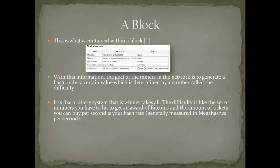You have many people playing Powerball or Mega Millions, and sometimes jackpots get very large. The difficulty is the set of numbers you have to hit — like getting all six Powerball numbers to win. To win the block, you have to achieve a hash beneath a certain value, and the number of tickets you can buy is the rate at which you produce and check hashes. You'll see terms like Mega Hashes or Giga Hashes — think of those as how many lottery tickets you're allowed to buy per second. The first person to match the numbers wins the block.